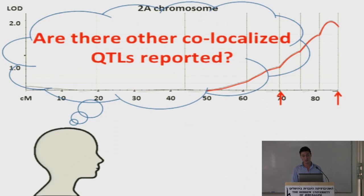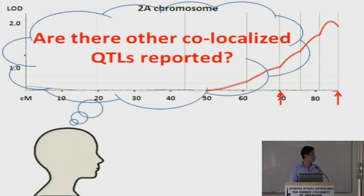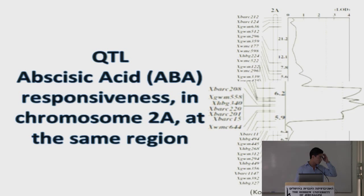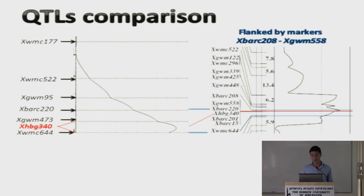We already knew the genomic region is on chromosome 2A. So we asked: are there other co-localized QTLs reported in this region? In the literature, we found a QTL related to ABA (abscisic acid) responsiveness on chromosome 2A at the same region. We compared them and found very strong similarities.